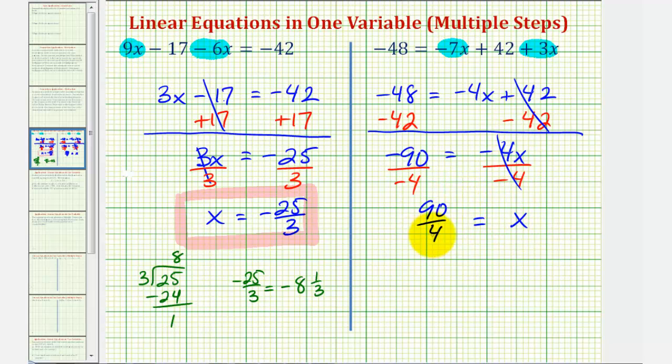So this is our solution, but this fraction is not simplified. 90 and four do share a common factor of two, so we'll divide both the numerator and denominator by two to simplify this fraction. We can write this as x equals, and then 90 divided by two is 45, and four divided by two is two, so our solution is 45 halves, which is simplified. Even though it is an improper fraction, it is our solution.